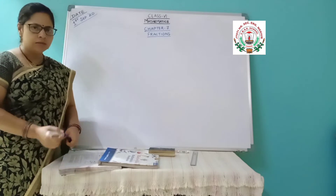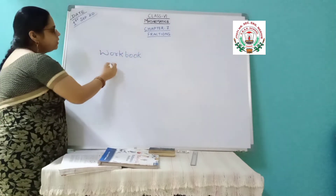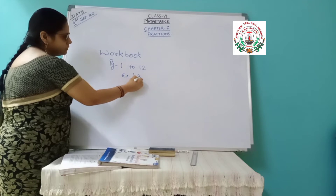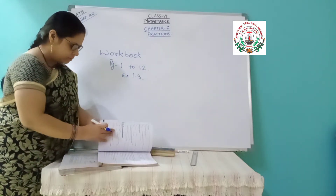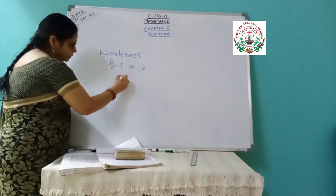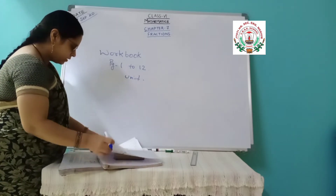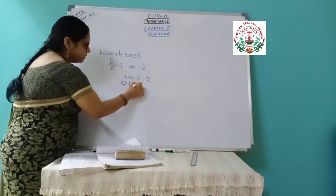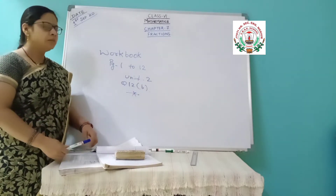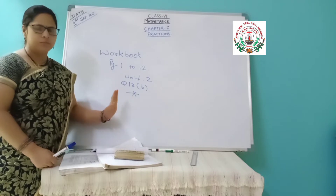When you start this workbook, you have to begin solving it by yourself. From page number 1 to 12, it is exercise 1.3, going up to question number 10. Up to unit 2, given on page number 12, question number 12B — up to here you have to solve, complete and keep. You are getting one week's time for this. Then I will give you the next exercise of chapter 1, but up to that time you have to complete this up to page number 12.